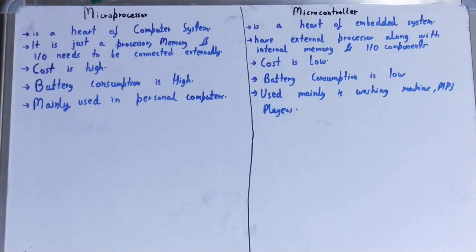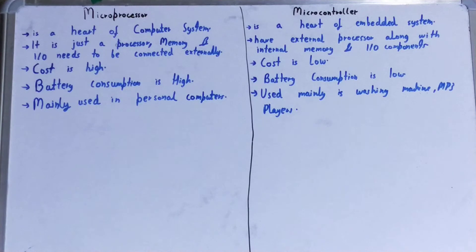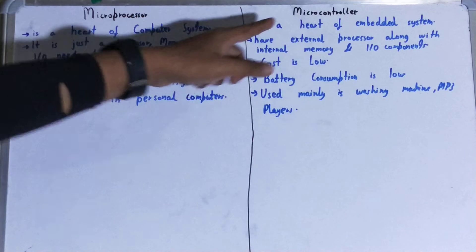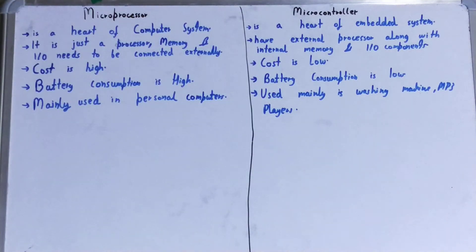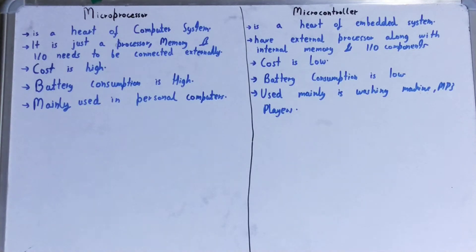From the first point we can make out that a microprocessor does a lot of tasks, so they are generally multitasking. Whereas a microcontroller is generally designed for a specific set of tasks — generally one or two tasks.